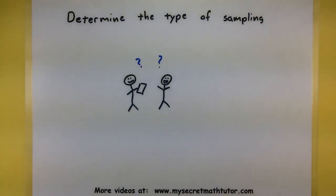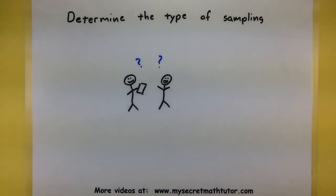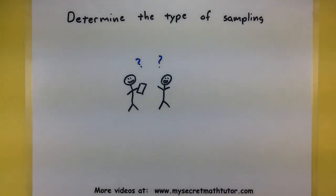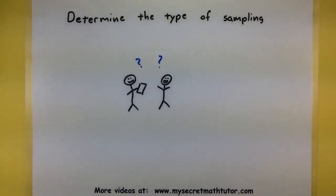Hi, and welcome to MySecretMathTutor. In this video, we're going to determine the types of sampling that are being used, just by going through many different types of examples and trying to pick out key differences as to what sampling is being done. Let's give this a try by jumping into these examples.